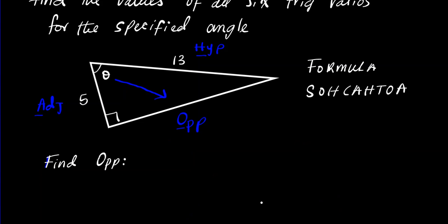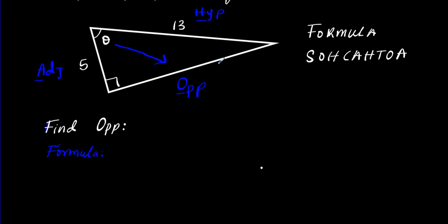How do we find the opposite? We're going to use the following formula - the Pythagorean theorem. We're going to be using the advanced variation of the Pythagorean theorem. So the formula is going to be a² + b² = c².